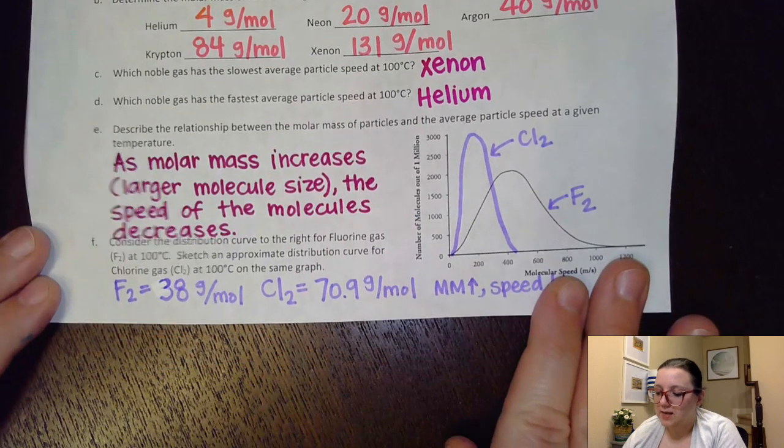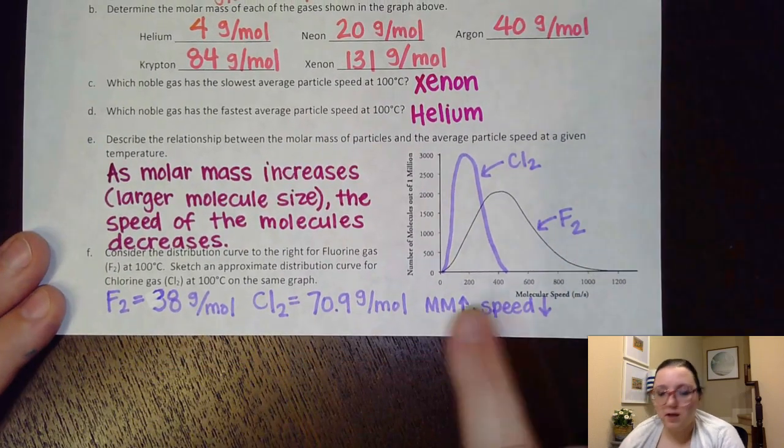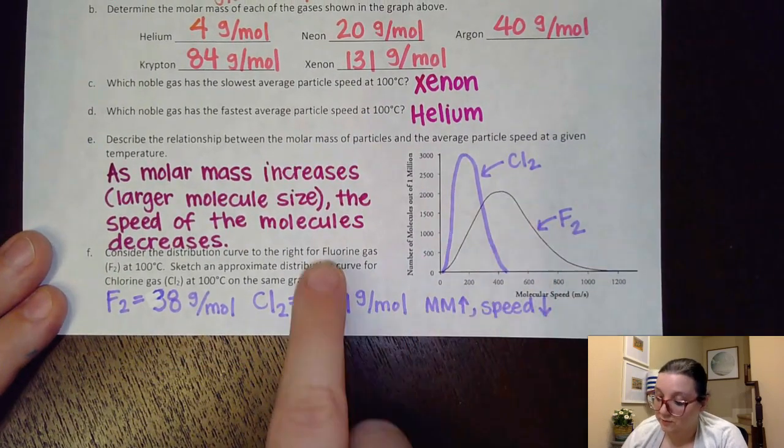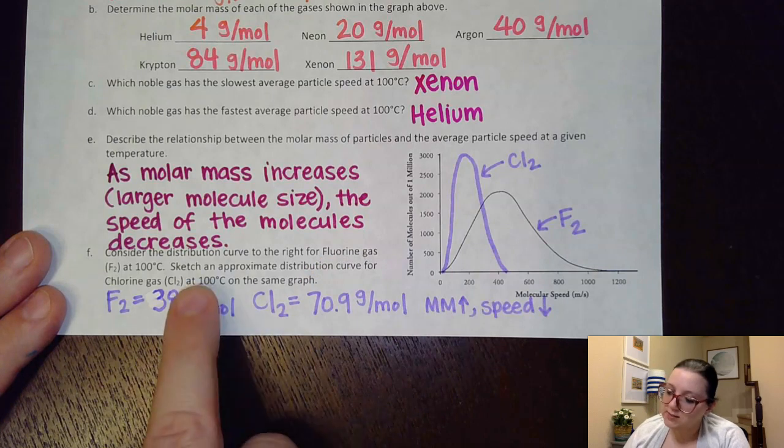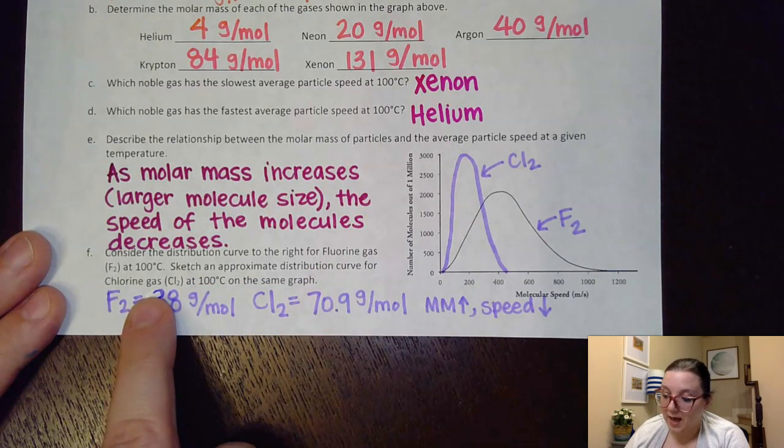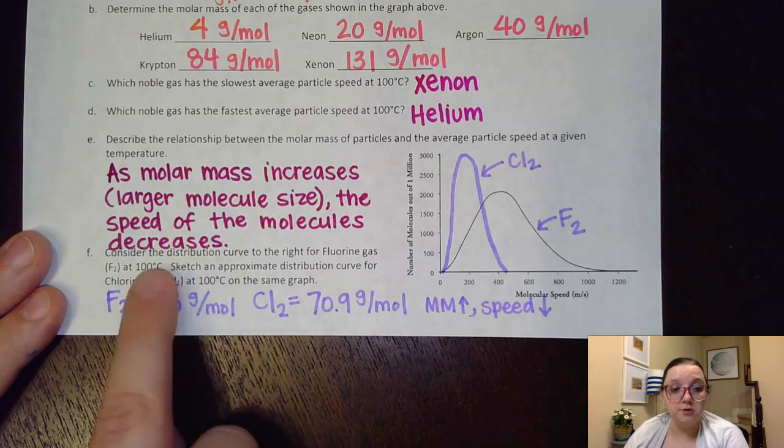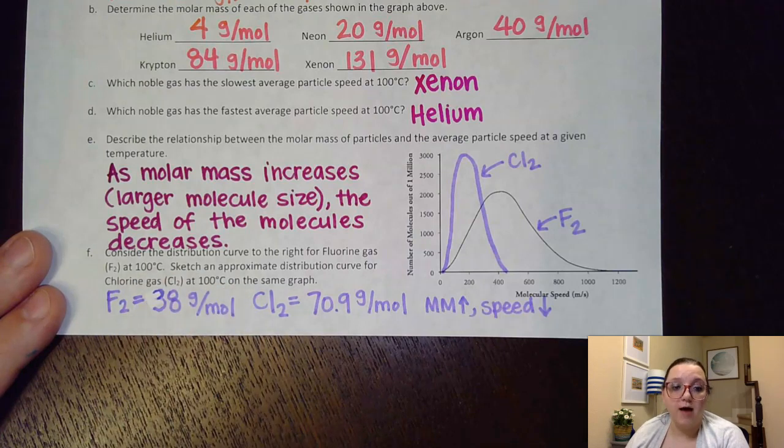Now, the next question said, I have a lovely curve here that's representative of fluorine gas. And I wanted to sketch an approximate curve for chlorine gas at the same temperature, 100 degrees Celsius, on the same graph. And so this is where I would need some molar mass information about my two gases.